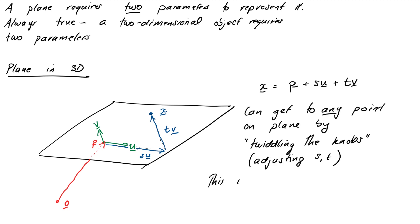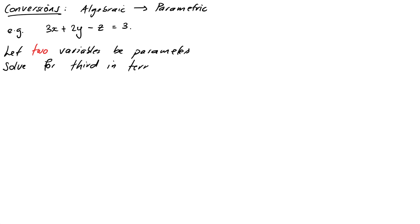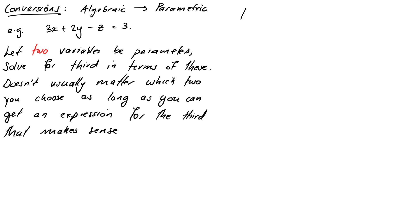So those are our two main equations for planes. Now, it's useful to be able to convert between the two different forms because sometimes one is more useful than another. So let's start by looking at how you'd convert an algebraic equation, which comes from a point normal equation, to a parametric one. And this is an operation that you'll actually be doing a whole lot a bit later in the course, but in maybe a slightly more abstract setting. So we'll start off with a plane equation such as 3X plus 2Y minus Z equals 3. And then by being inspired by what we did for lines, we'll let two of the variables this time be parameters and we'll solve for the third one in terms of these.